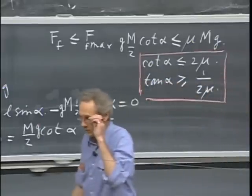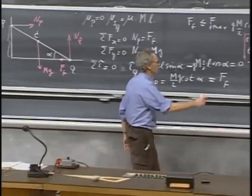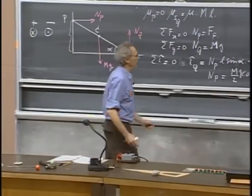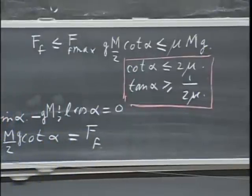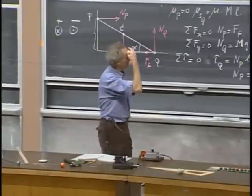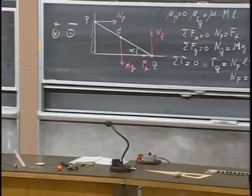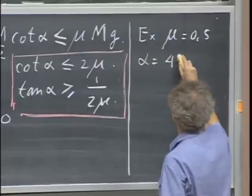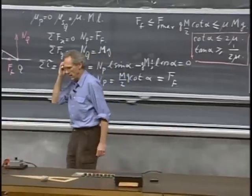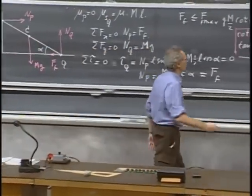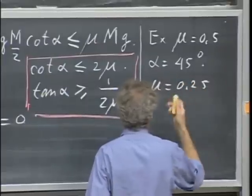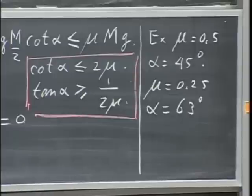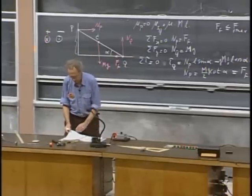When you look at this result, it tells you that the larger mu is, the smaller the minimum angle — exactly what you expect. If mu is very low, the situation is very unstable and it will slide at almost any angle. For example, if mu equals 0.5, then alpha would be 45 degrees — any smaller and it slides. If mu is 0.25, the critical angle is somewhere near 63 degrees — you can check that for yourself.